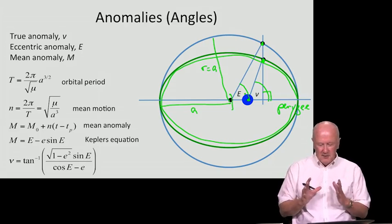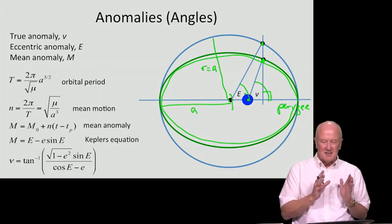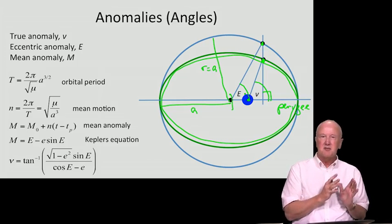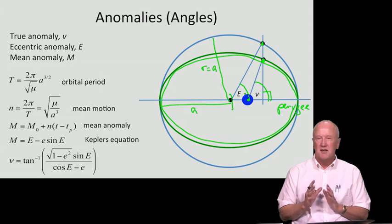If we draw this line perpendicular to the semi-major axis, punch through the satellite and continue until we reach that enclosing circle, we can now define a vector from the center of the system up to that point, and the angle made by that vector and perigee is equal to capital E or the eccentric anomaly. So the true anomaly is the easiest one to visualize. The eccentric anomaly is getting a little bit more abstract but we can still draw it. The mean anomaly is very difficult to even draw.